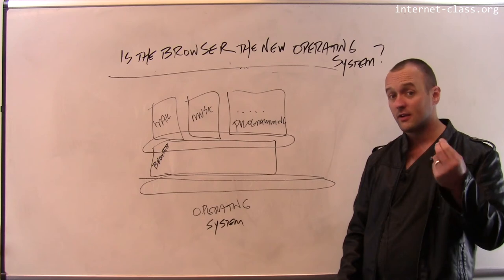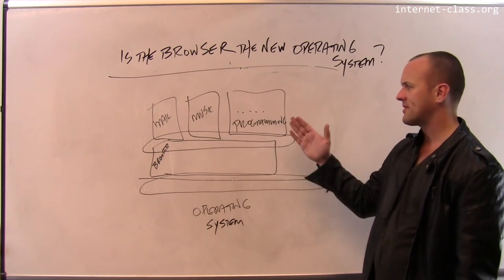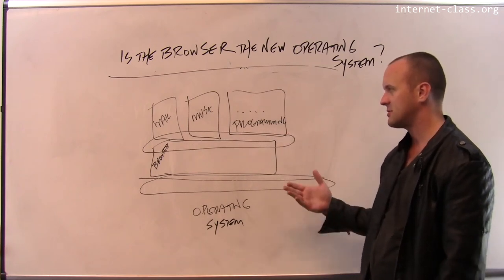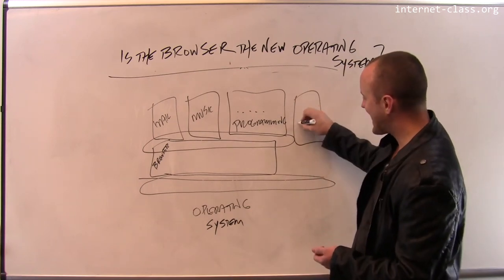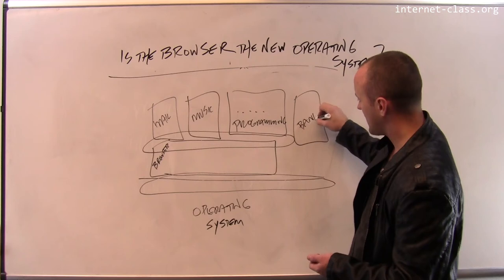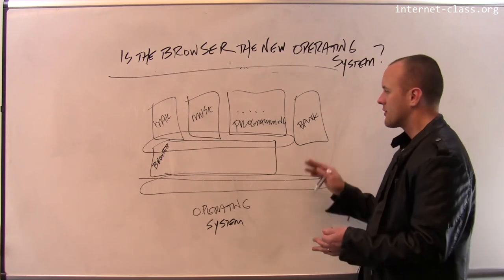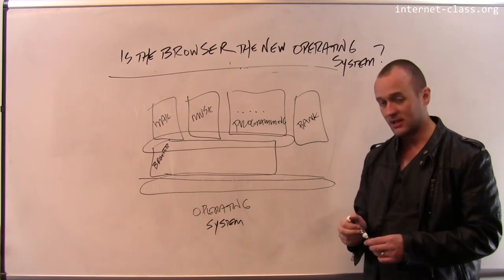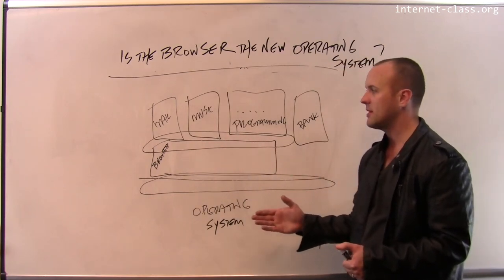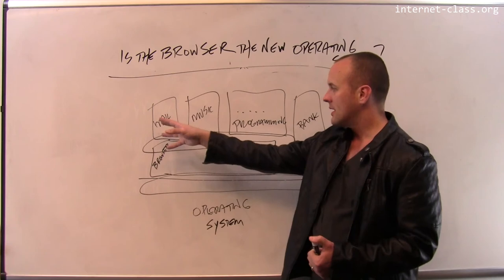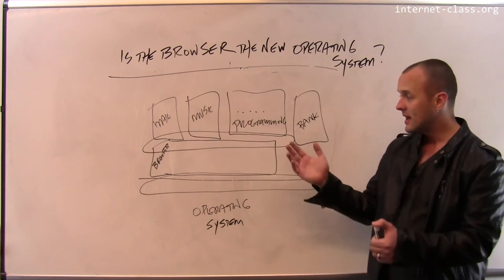One example is security issues. How do I make sure that a dodgy programming website I'm visiting to look up something about JavaScript doesn't get access to my bank accounts open in another tab — the credit card numbers, account numbers, and things like that? How do I make sure there isn't unintentional sharing? The browser also has to divide resources between applications — how do I make sure a mail client with a bug doesn't slow everything else down, like my music playback?